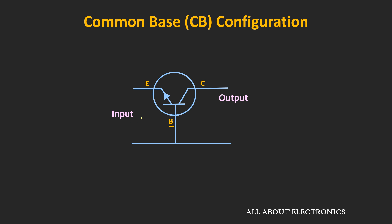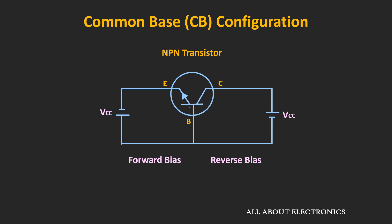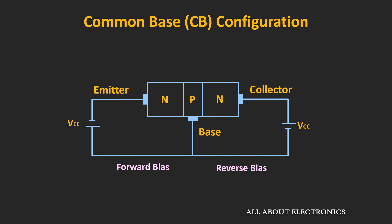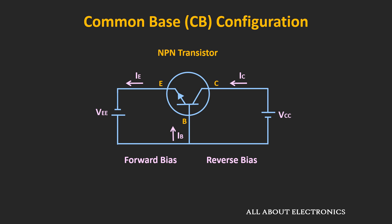As mentioned in the previous video, whenever we use this BJT as an amplifier, it is used in the active region. That means the base-emitter junction is forward biased and the collector-base junction is reverse biased. For the NPN transistor, the applied voltage should be such that the base-emitter junction gets forward biased and the collector-base junction gets reverse biased.